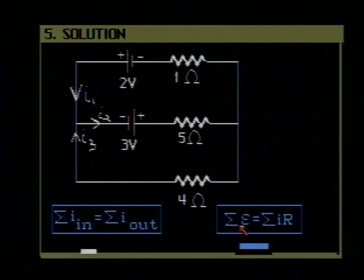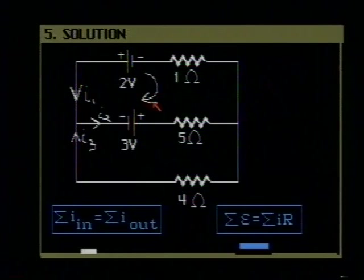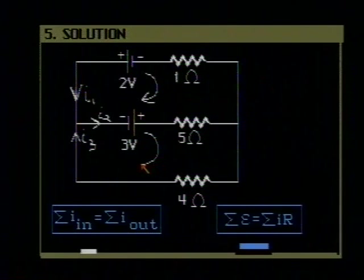Let's apply our second equation. The sum of the EMF's around any closed loop is equal to the sum of the IR drops around that loop. First thing we have to do is define our loops in a direction. Let's take this upper loop and we will trace around it in a clockwise direction and I'll pick the lower loop and go around it in a clockwise direction.